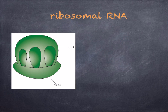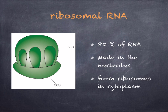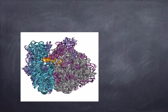Let's have a look at ribosomal RNA. Ribosomal RNA is a large complex molecule which makes up about 80% of RNA. It has a sequence of organic bases which is very similar in all organisms. It's made in the nucleolus, and then it associates with proteins in the cytoplasm to form ribosomes, which form the site of translation. Here you can see a computer-generated image of ribosomal RNA.